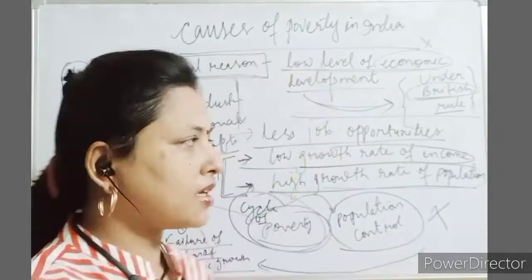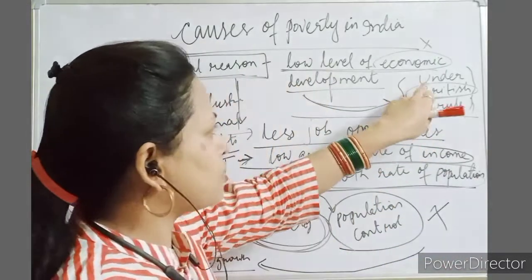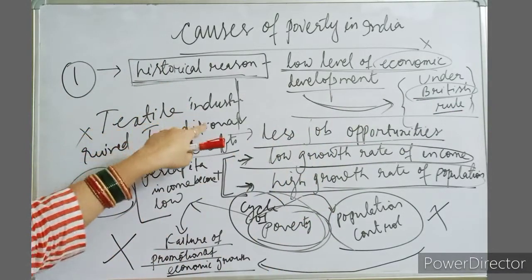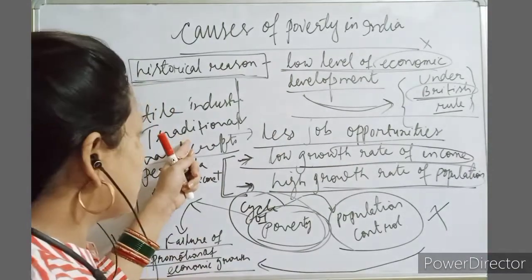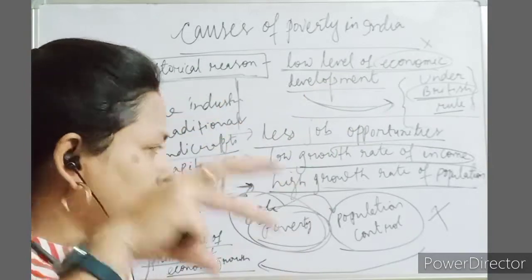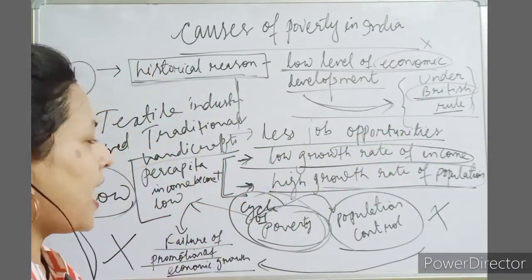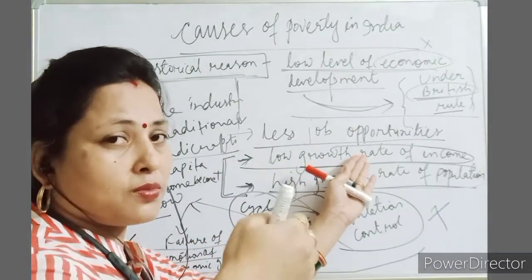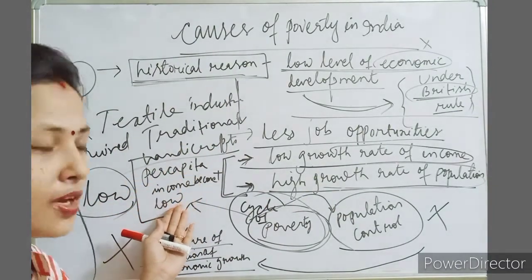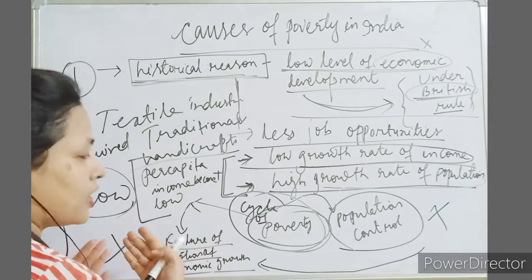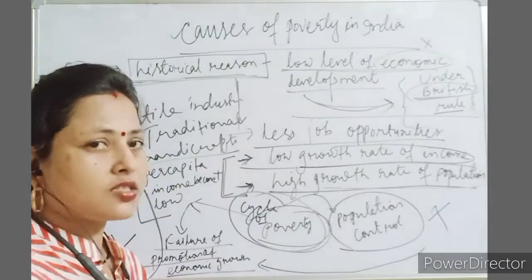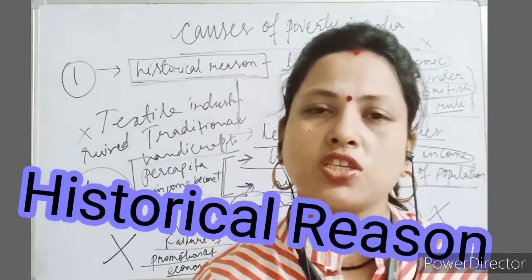To summarize, the historical reason means that our country was in the hands of British rule, so we were not able to work independently. This rule discouraged the two main industries — textile industries and traditional handicrafts. This led to a very poor level of economic development, less job opportunities, and a low growth rate of income — accompanied by a high growth rate of population — resulting in very low per capita income and ultimately poverty.